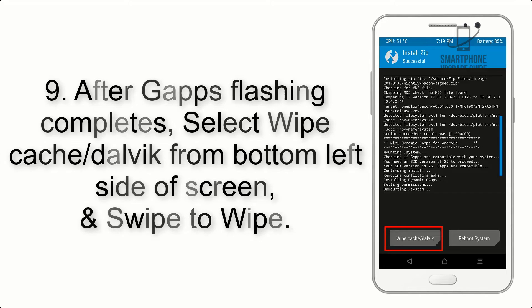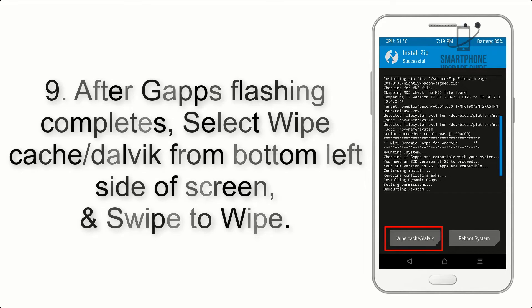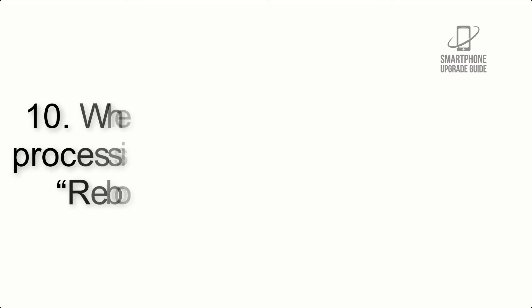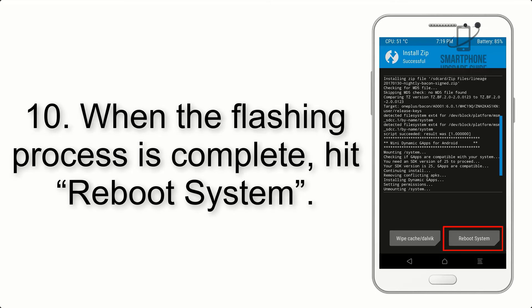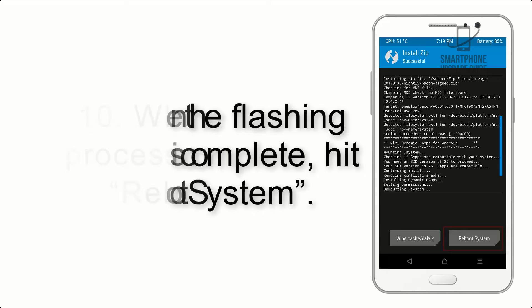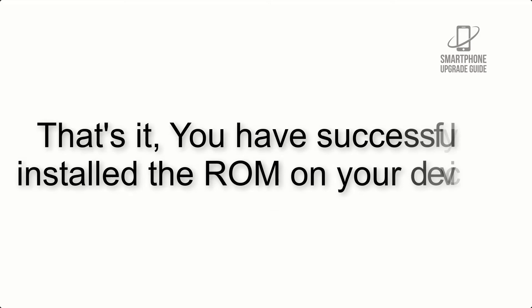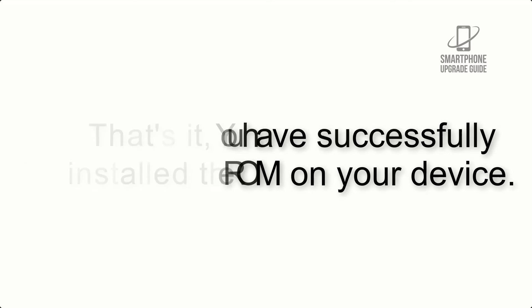Step 9: After GApps flashing completes, select Wipe Cache and Dalvik from the bottom left side of the screen and swipe to wipe. Step 10: When the flashing process is complete, hit Reboot System. That's it — you have successfully installed the ROM on your device.